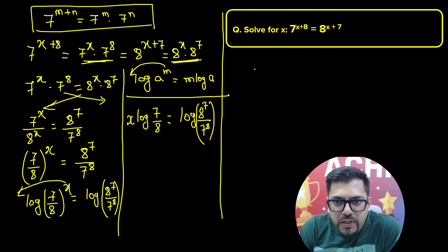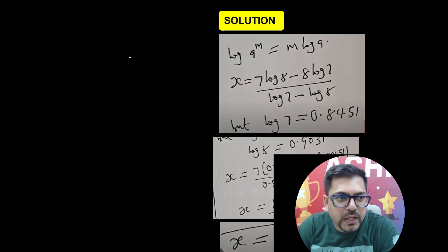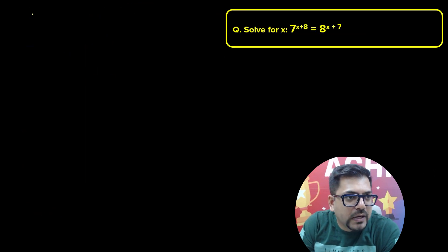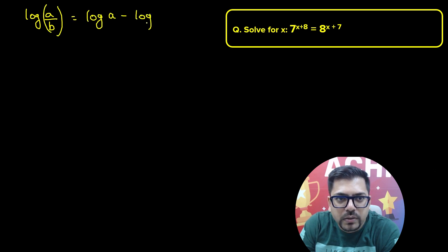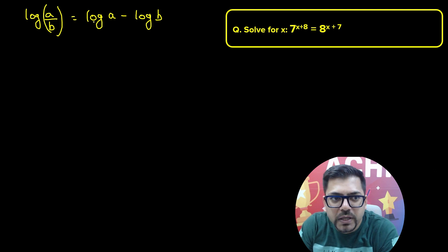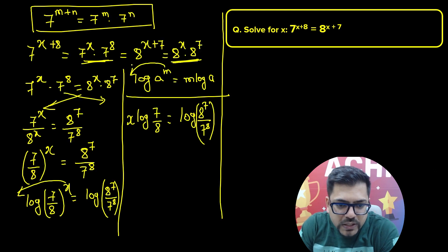Now here again we'll apply a property. What is the property? We have log of a divided by b, so we can write it as log of a minus log of b. So this can be written in the same fashion. I'll do this for the right hand side part.